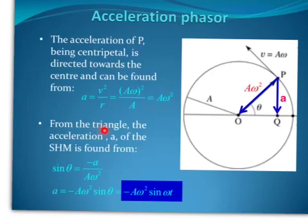And from the triangle, which is that one there, we can work out this component here, which represents the acceleration for the simple harmonic motion up and down. So from this triangle, we can work out a, being that.